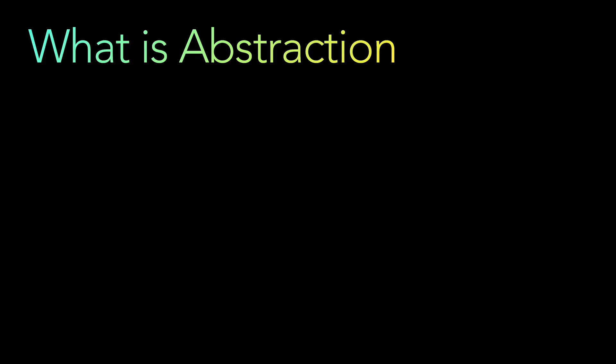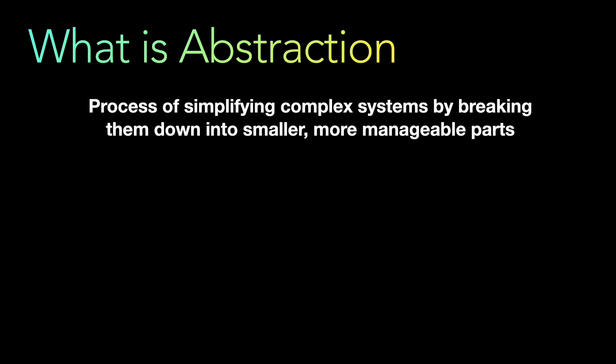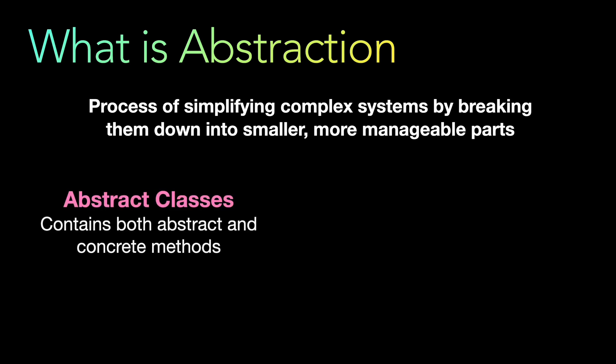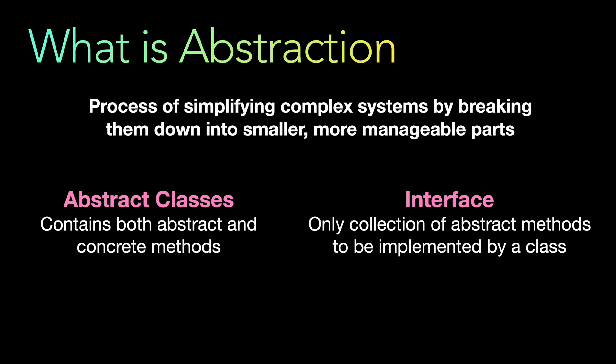What is abstraction? At its core, abstraction is the process of simplifying complex systems by breaking them down into smaller, more manageable parts. In Java, abstraction is achieved through abstract classes and through interfaces. An abstract class is a class that cannot be instantiated — you cannot create an object of an abstract class — and it can contain both abstract as well as concrete methods.